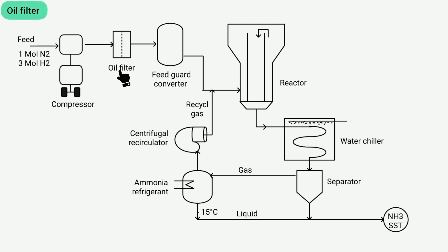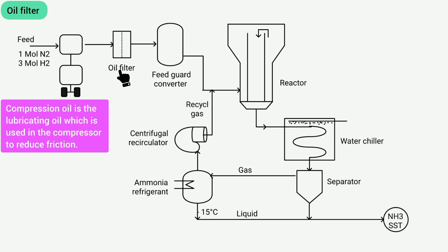This is called an oil filter. Through this, the impurities and compressed oil particles present in the feed are filtered and removed. If the oil particles reach the reactor, more temperature will be required to complete the reaction in the reactor, leading to higher energy consumption. This results in economic loss, therefore an oil filter is used. For information, compression oil is the lubricating oil which is used in the compressor to reduce friction.